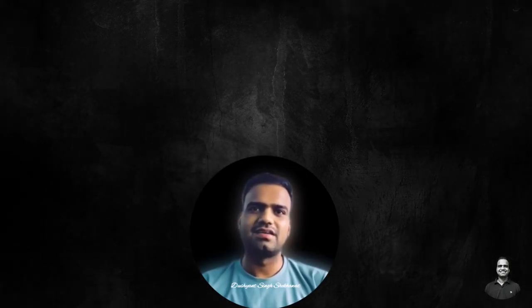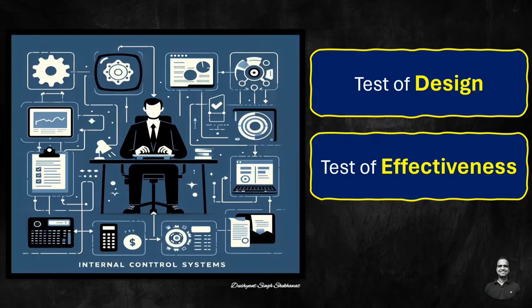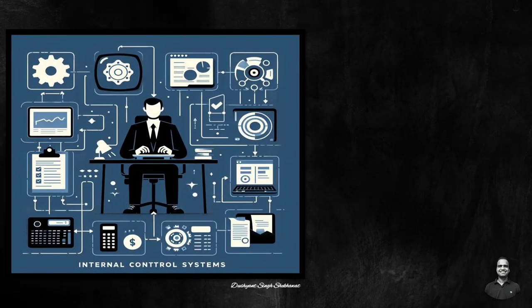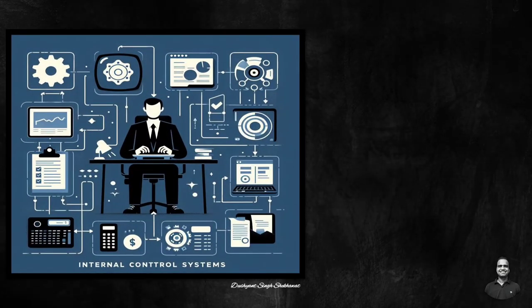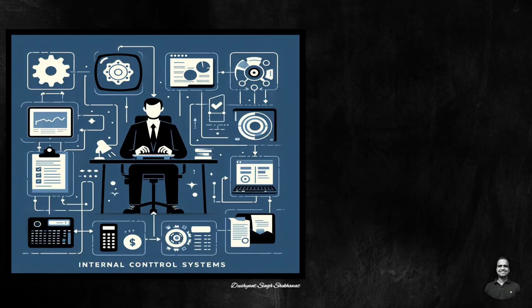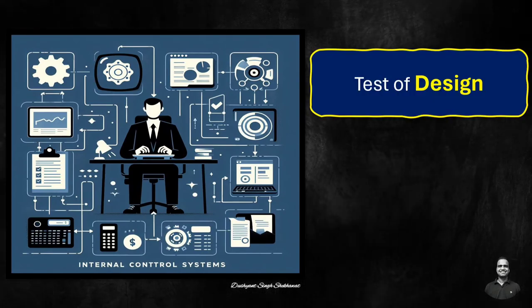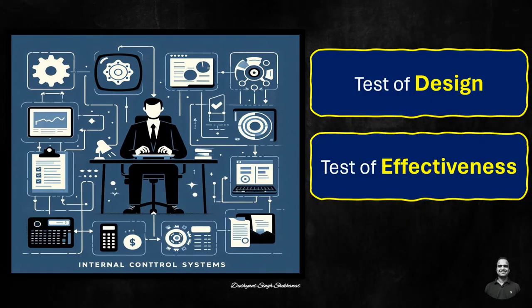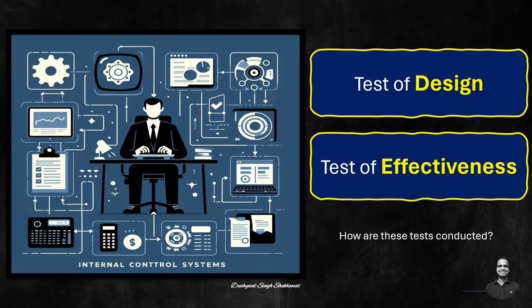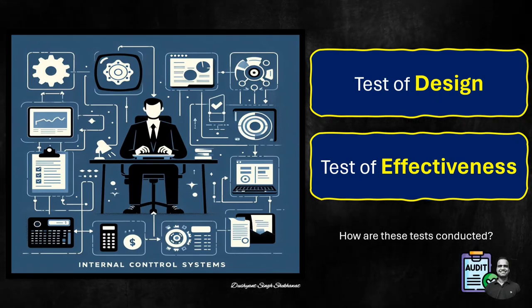Hello friends and welcome back. Today we will understand two important aspects of internal control systems within an organization: the testing of control design and testing of operating effectiveness. We will also explore how these tests are conducted during an audit along with some examples.